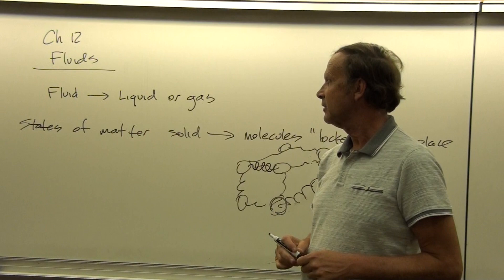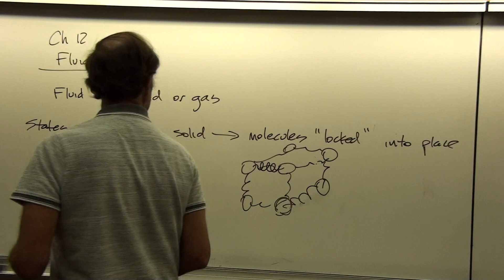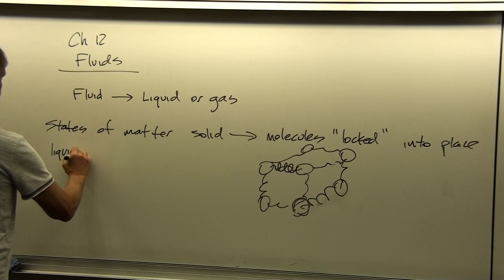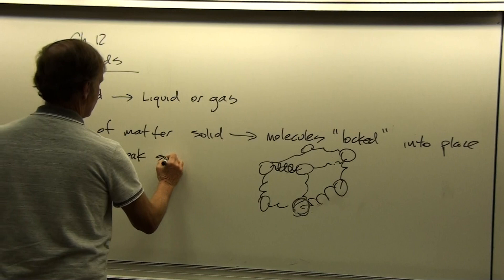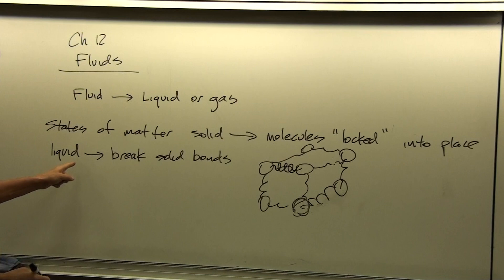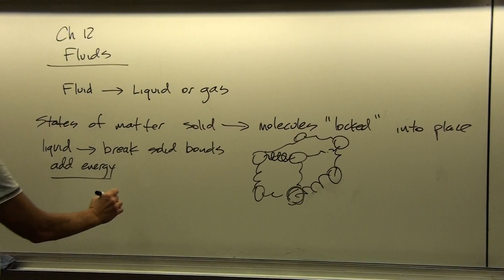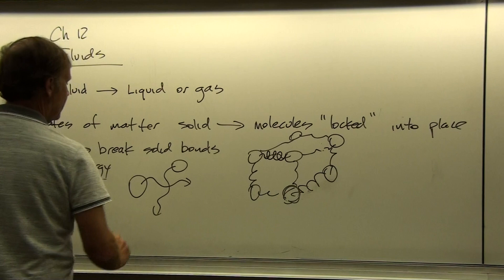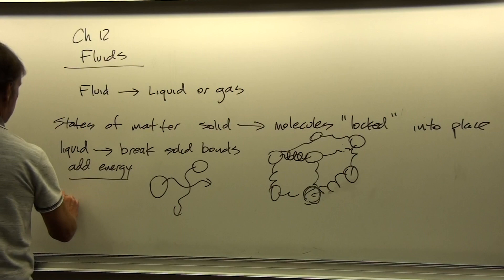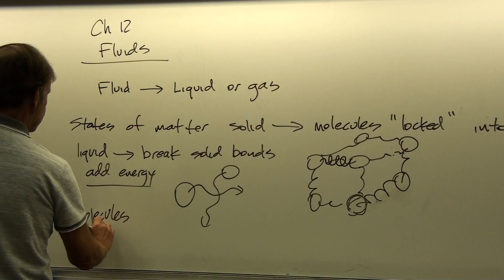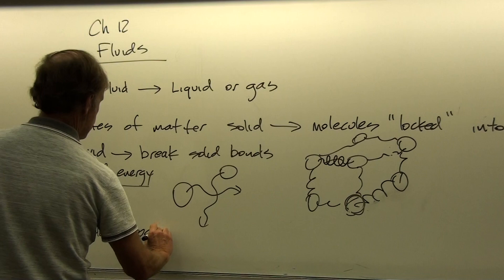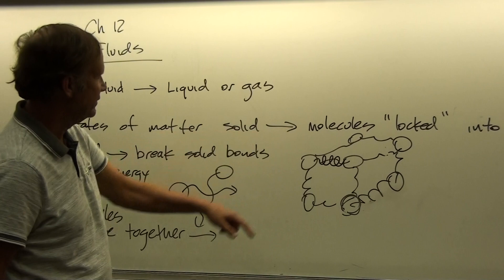If you increase the temperature, you can shake these atoms apart and get a liquid — you break the solid bonds. You can do this by adding some kind of energy, like temperature. The molecules will tend to still be fairly close to each other, but they will flow past each other and will not have the same relative configuration. They're still close together, just like in a solid, but they don't maintain that locked-in-place configuration.